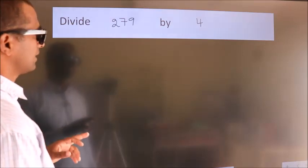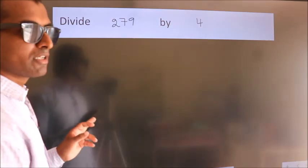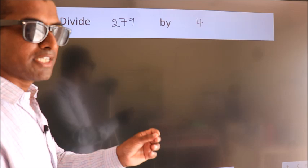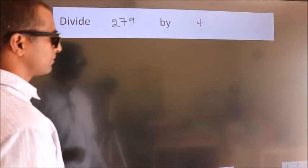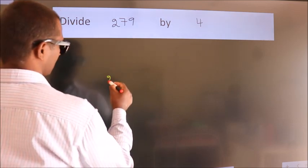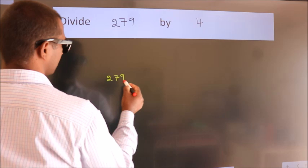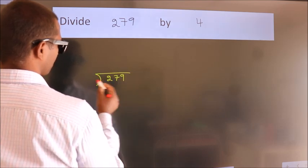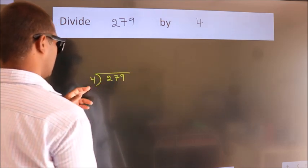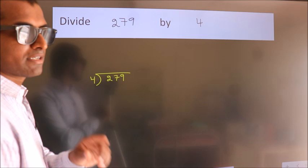Divide 279 by 4. To do this division, we should frame it in this way. 279 here, 4 here. This is your step 1.